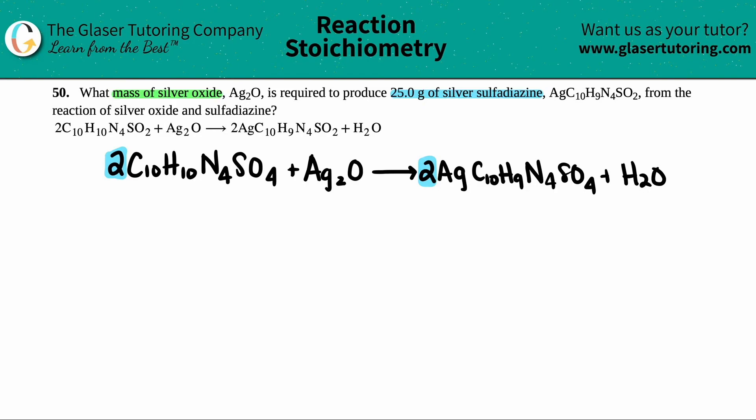I'm going to write underneath my balanced equation what was given and what we need to solve for. They told us that we want to produce 25.0 grams of this silver sulfadiazine. So I have 25.0 grams of this. Now, what was the question asking for? They're asking for what mass of the silver oxide is required to produce the 25.0 grams. They're looking for the mass, and remember, mass is grams. I don't know how many grams of the silver oxide I'm going to have. That's what I'm trying to find.